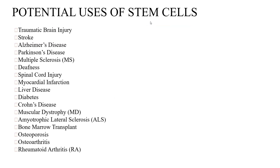There are many diseases where stem cells are used in treatment: traumatic brain injury, stroke, Alzheimer's, Parkinson's, sclerosis, deafness, spinal cord injury, MI, liver diseases, endometriosis, Crohn's disease, muscular dystrophy, bone marrow transplant, osteoporosis, osteoarthritis, rheumatoid arthritis. They are potentially used in a lot of conditions.